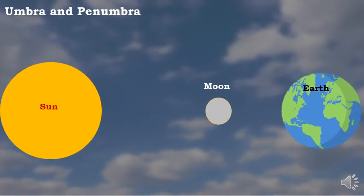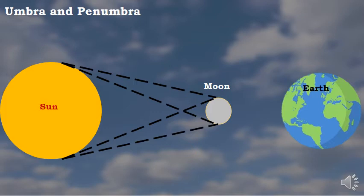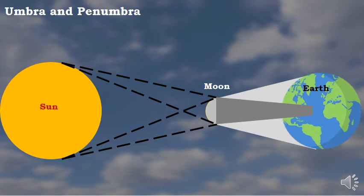Let us understand umbra and penumbra in daily life. We have our sun, moon and earth here. Sun is the source of light that we all know. Rays coming from the sun are falling on the moon. And what we observe on the earth, center part is darker and around that is little bit lighter. Center one is umbra and other side it is penumbra.